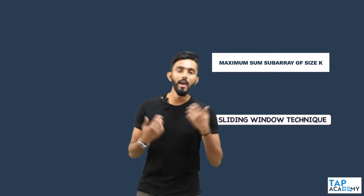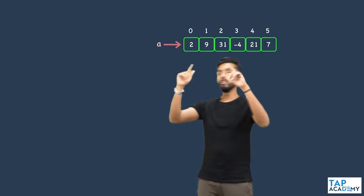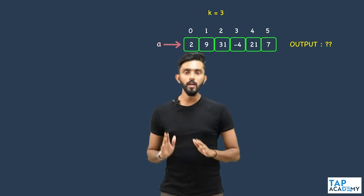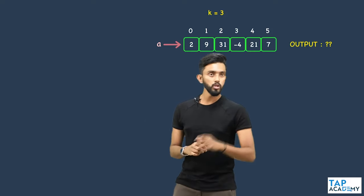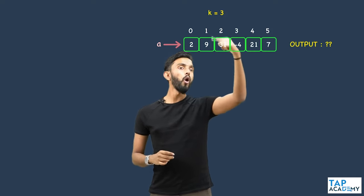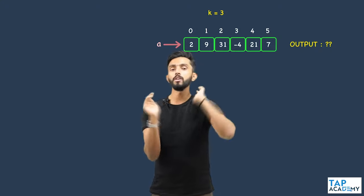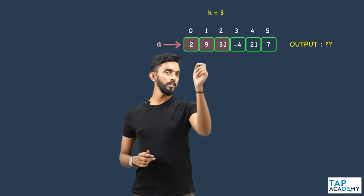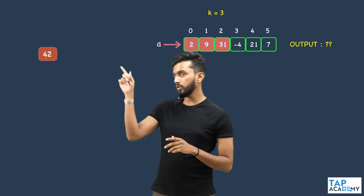The sliding window technique can help you solve a wide variety of problems very efficiently, so it's very important for you to know. Now, what does this problem expect us to do? Assume this is an array given to me, and they also give me a k value of 3. You must find a subarray of size 3 whose sum of elements is maximum. For example, 2 plus 9 plus 31 gives 42.